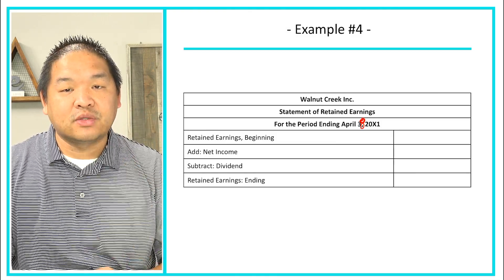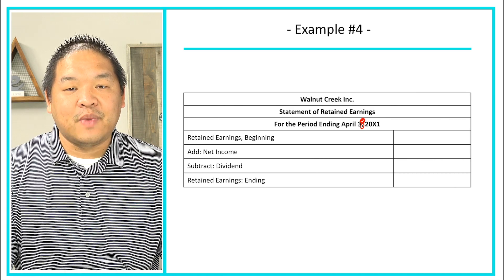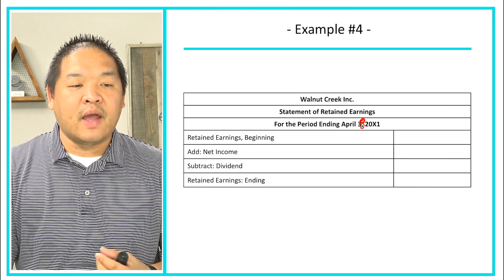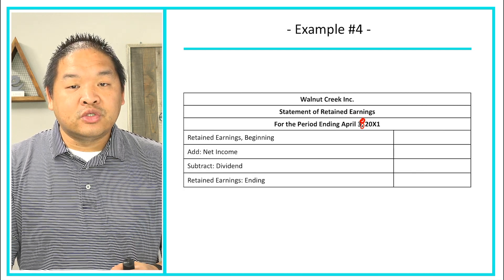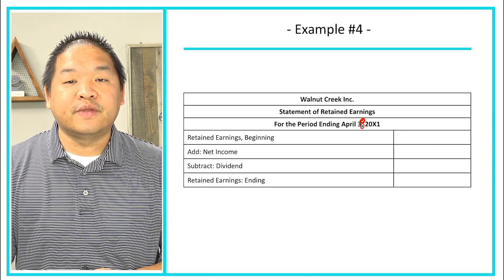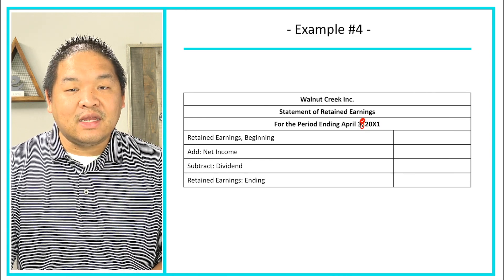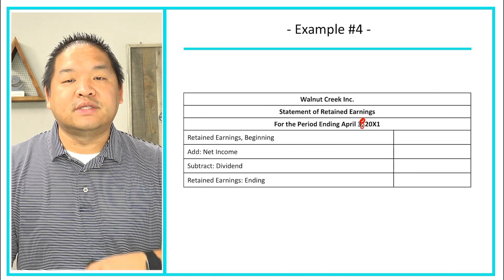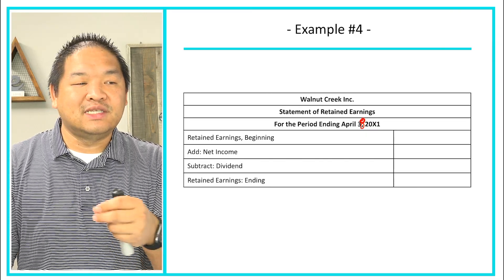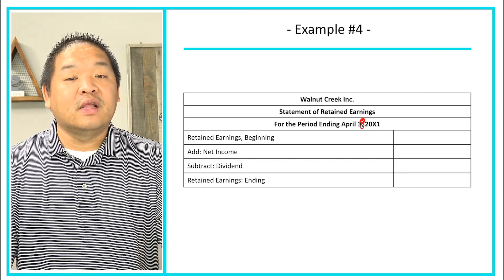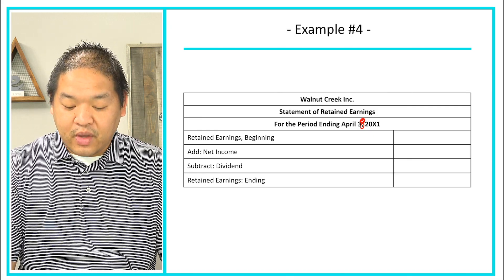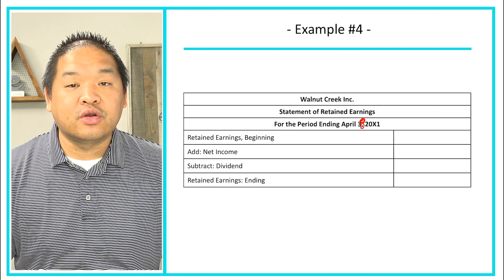So how do we prepare the statement of retained earnings? We start with the beginning balance of retained earnings, add net income, and subtract any dividends paid — that gives us the ending retained earnings. The way I like to think about it: the company made money, they have two options — either distribute it to shareholders in the form of a dividend, or retain it and reinvest in their business.